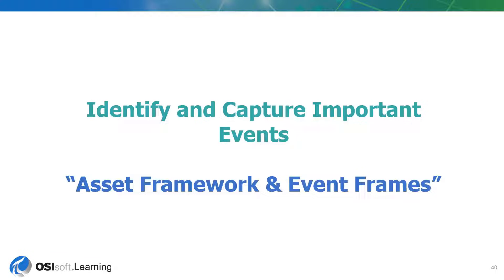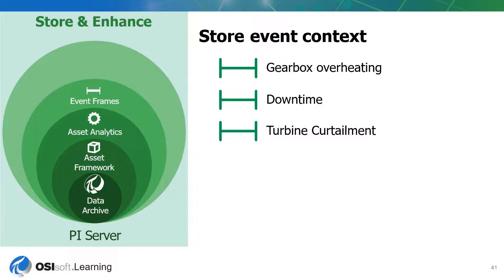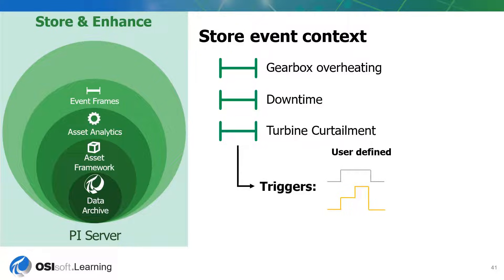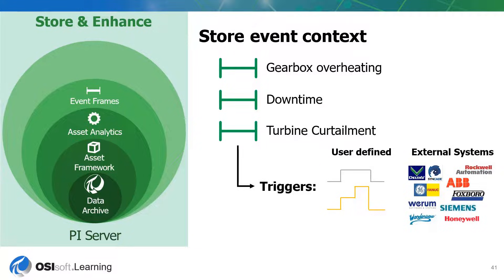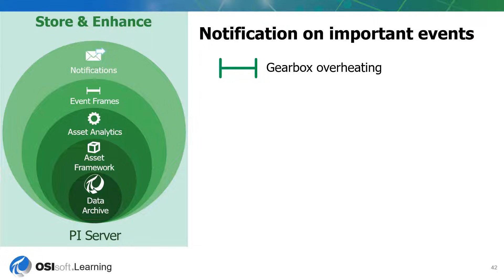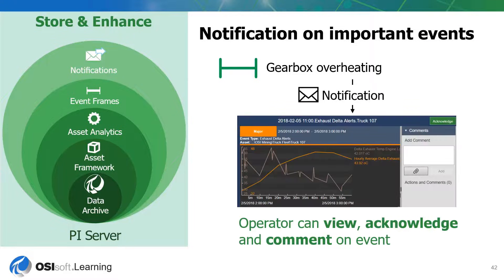Next, we're able to identify and capture important events with our Event Frames. For example, if you need to capture the downtime or know when a particular piece of equipment is malfunctioning, or any other important event in your process, you can define triggers — either defined by yourself or from external systems. When these important events happen, you'll want to make sure that you can be notified, especially if something needs to happen immediately. You can send an email notification, or in this case, a PI Vision display, so your operator can view, acknowledge, and comment on any event in real time.